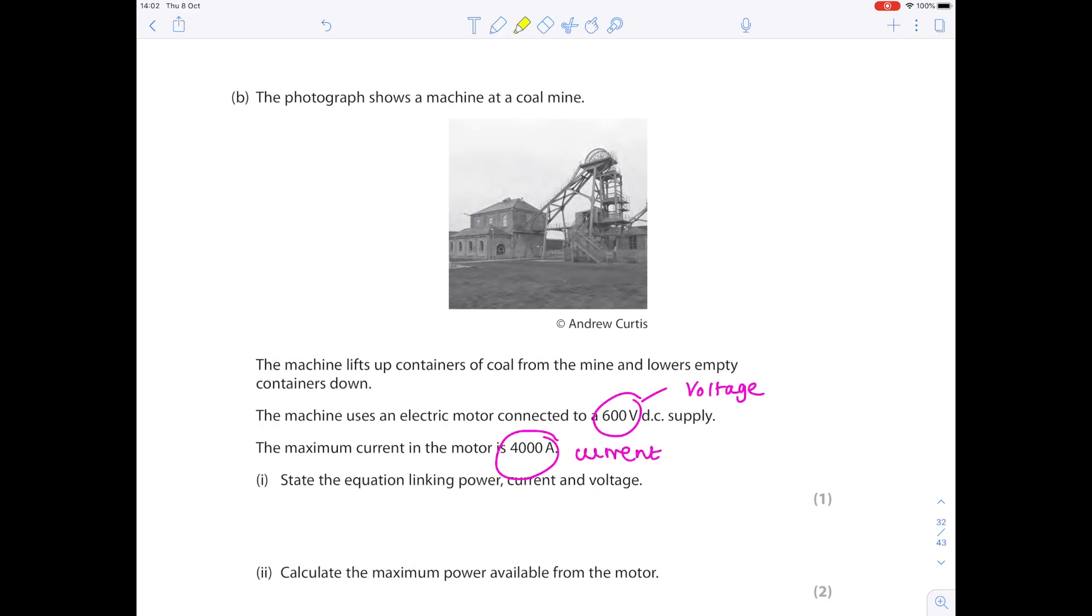Now we're being asked to state the equation linking power, current and voltage. So you need this formula triangle which is PIV. Remember I stands for current. So you cover whatever it is you're after. So I'm after power and I can therefore see that it's current times voltage. You can either write it out in words or in the accepted format which I'm displaying here. Do not write current as C. You have to write it as I because I stands for intensity of current.